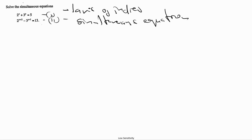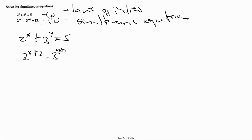Here we have two equations. Equation 1: 2^x + 3^y = 5. This is a simple equation and we don't have to do anything to this one yet. The second equation is 2^(x+2) - 3^(y+1) = 13. We know the law of indices which states that a^(m+n) = a^m · a^n, so we can express it this way.